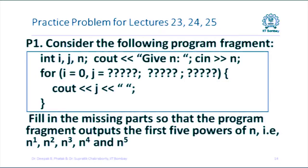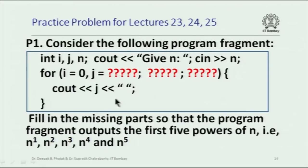For the next five minutes, try to write down the answer in your notebook. This is not a very difficult problem, but you should know what the different constructs are. Remember: the initialization part is executed just once before you enter the loop; the condition is checked every time you want to execute the loop body; and the update expression is also executed at the end of every iteration.